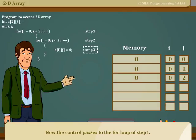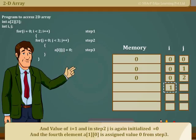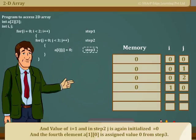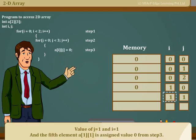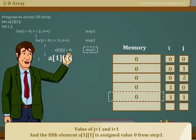Now, the control passes to the for loop in step 1 and value of i equals 1, and in step 2, j is again initialized to 0 and the fourth element A[1][0] is assigned value 0 from step 3. Value of j equals 1 and i equals 1, and the fifth element A[1][1] is assigned value 0 from step 3.